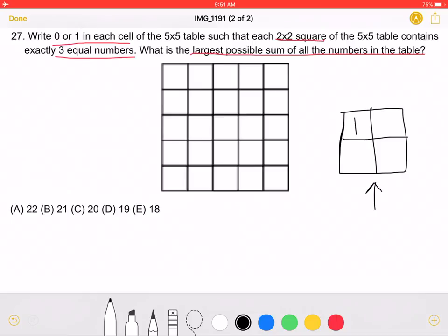we should have 3 1s. And any 2x2 square in the 5x5 table should be some sort of reflection or rotation of this right here.